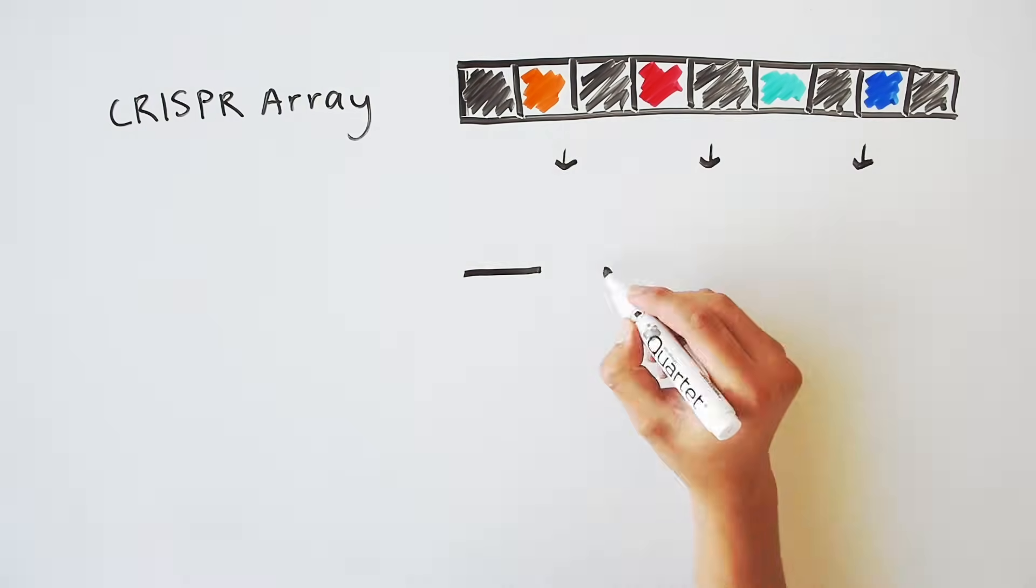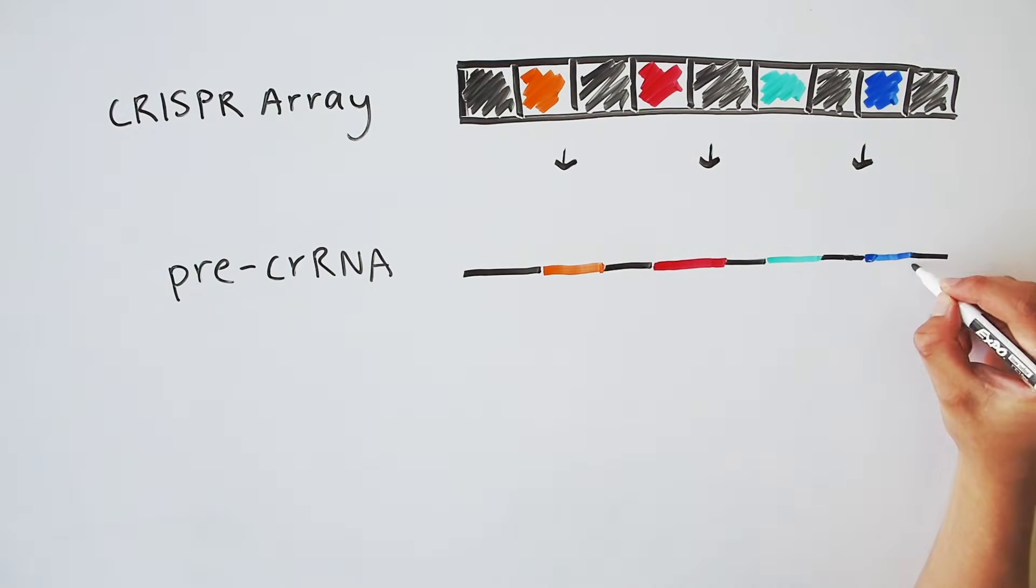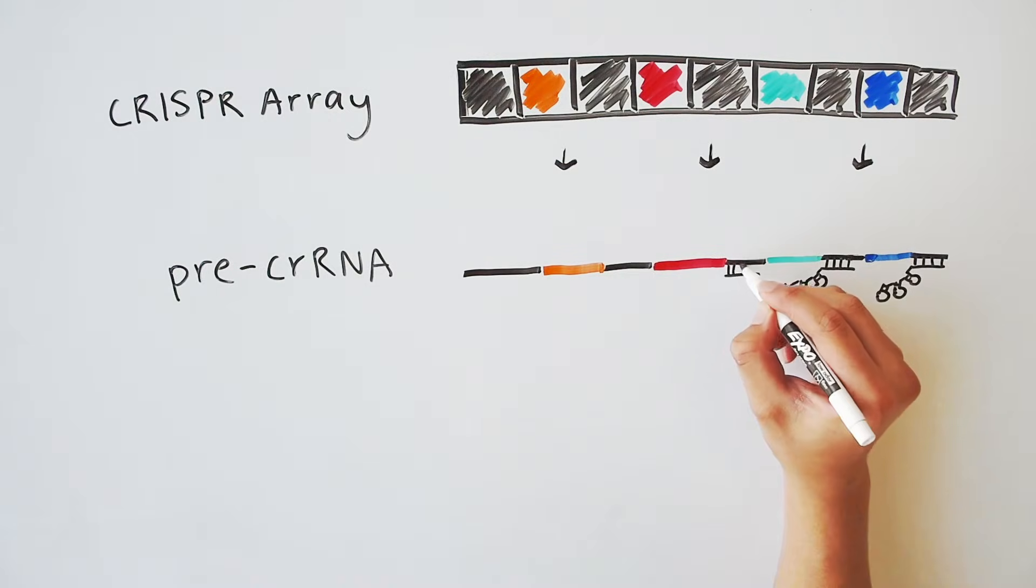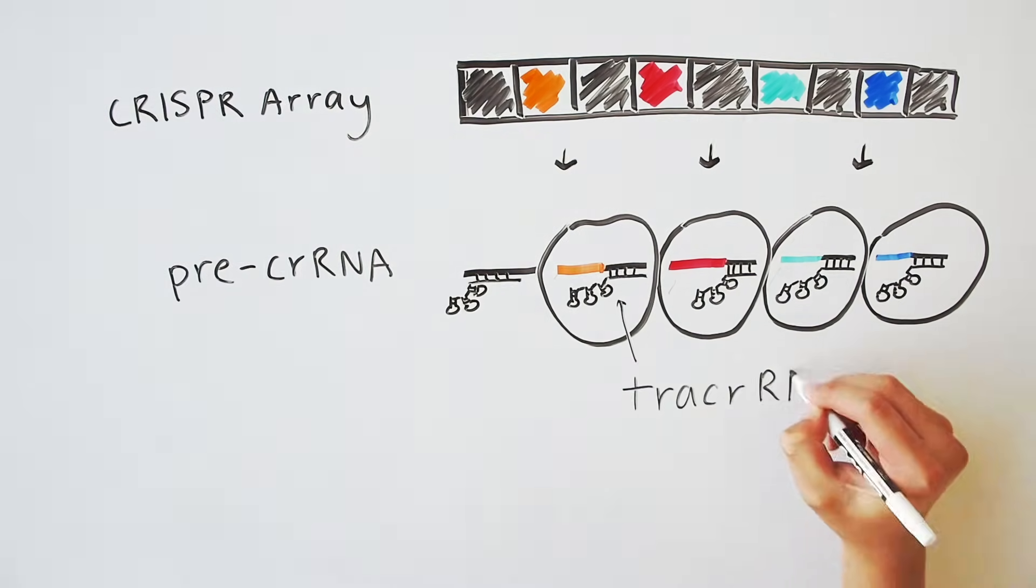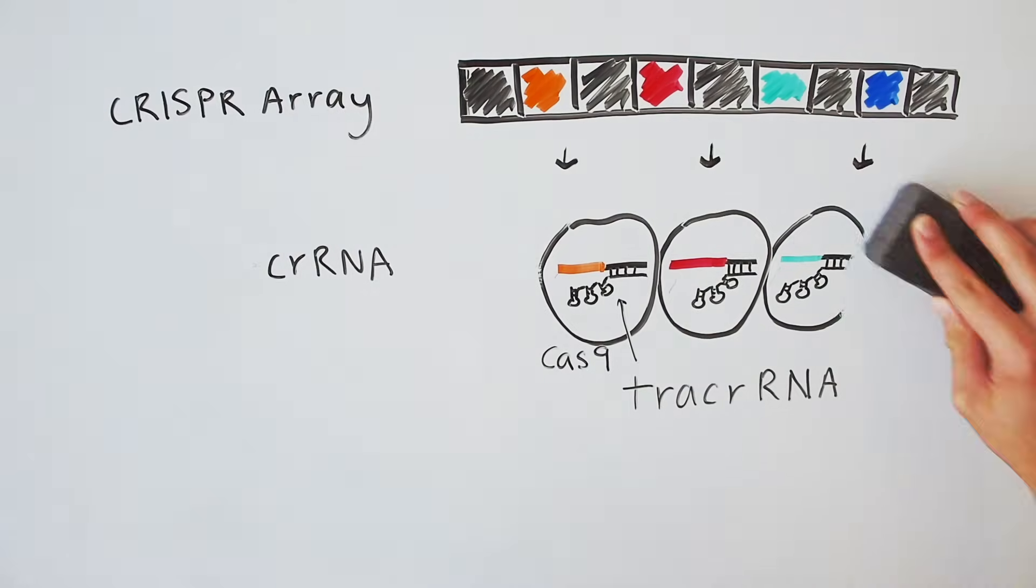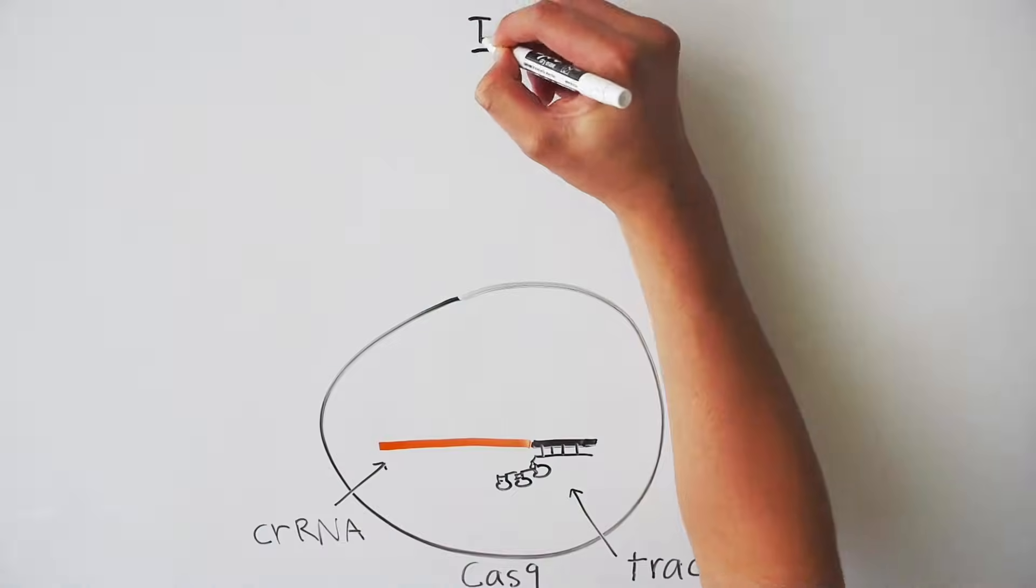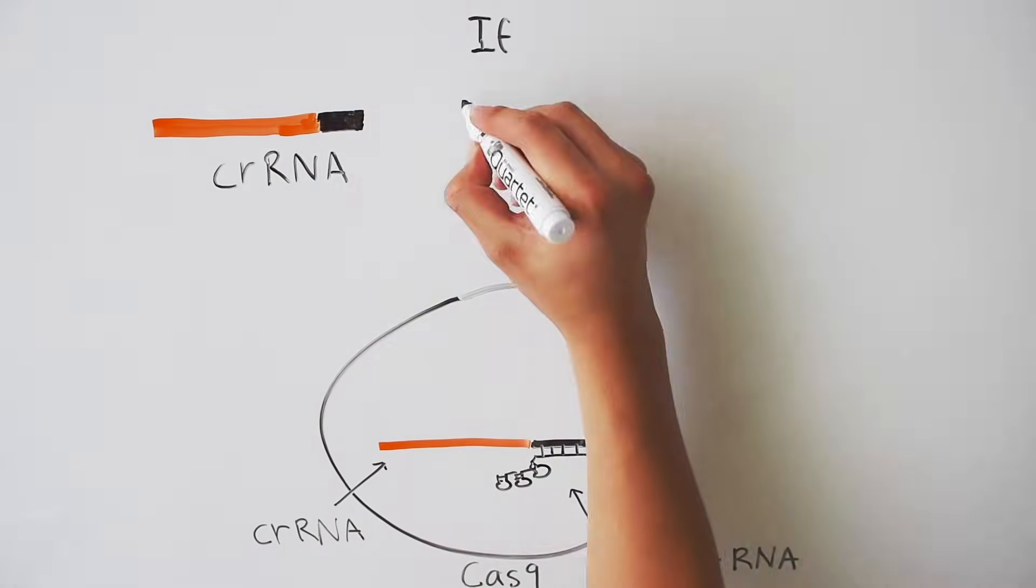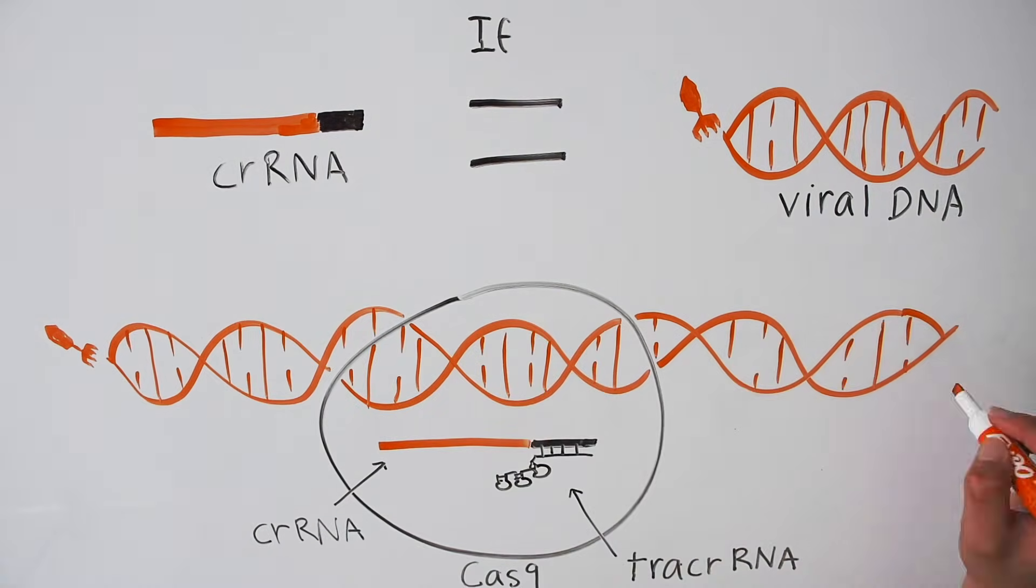This defense starts with transcribing a long CRISPR RNA from the repeats and spacers of the CRISPR array. Another RNA called a transacting or tracer RNA comes along and links up with the CRISPR RNA through base pairing. A protein known as Cas9 grabs onto the dual RNAs and they're trimmed to a more manageable size to form a complete search complex. If the sequence of the CRISPR RNA matches the sequence of the invading virus, Cas9 cuts the viral DNA and destroys the phage, allowing the bacterial cell to survive.